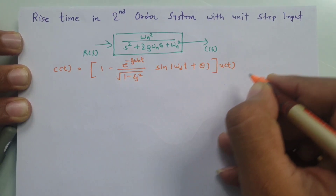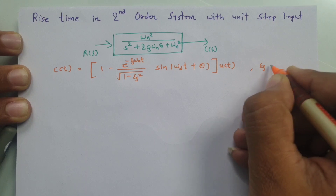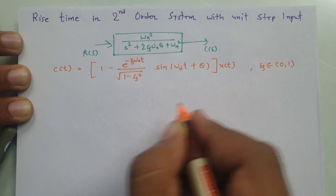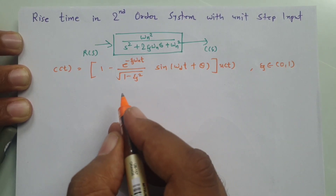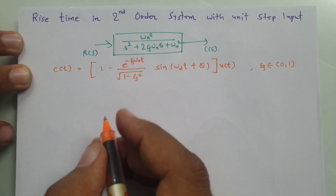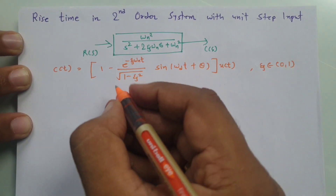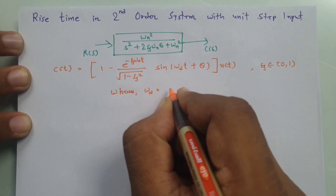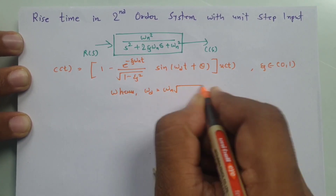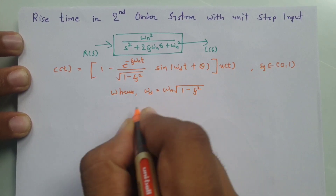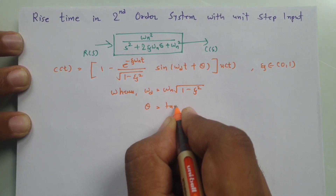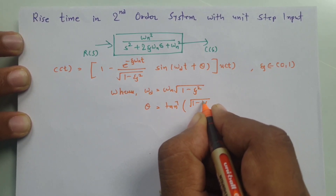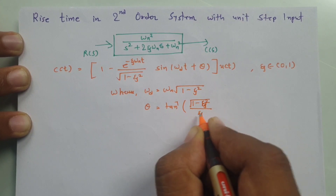This response is derived for damping constant ζ between 0 and 1, meaning this is an underdamped system. In this formula, ω_d equals ω_n times √(1 − ζ²), and θ equals tan⁻¹(√(1 − ζ²) / ζ).